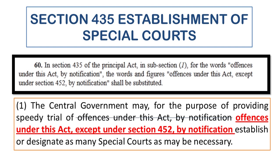In section 435, regarding the establishment of special courts, a few words have been substituted. Earlier it read that the central government may, for purposes of providing speedy trials of offences under this act, by notification establish or designate special courts. It now reads 'offences under this act except under section 452 by notification establish or designate as many special courts as may be necessary.' Section 452 has been carved out as an exception.